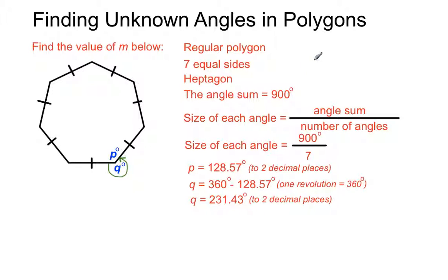We're mixing together a whole bunch of rules there. The fact that for regular polygons we can take the angle sum and divide by the number of angles or the number of sides, and also we're using the rule that one revolution adds up to 360 degrees to find out the value of q.